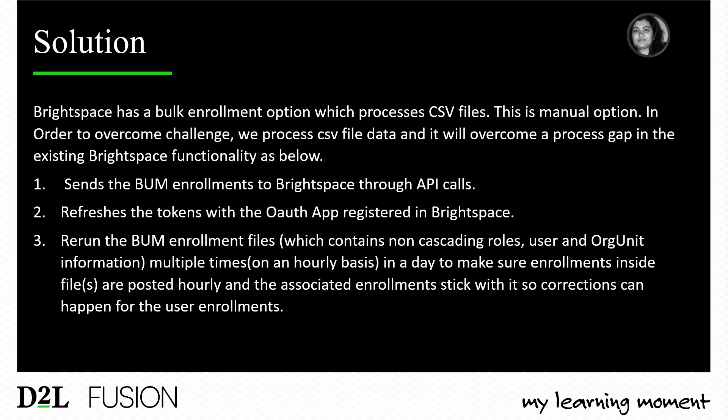Our solution: Brightspace has a bulk enrollment option that processes CSV files, but it is considered a manual option. To overcome this challenge, we process CSV file data via API to close the process gap. We send BUM enrollment files holding non-cascading role, username, and org unit code through API calls. The app refreshes the OAuth token automatically and runs enrollment files containing non-cascading roles—such as student, faculty, or instructor—multiple times hourly to ensure corrections stick for each user.